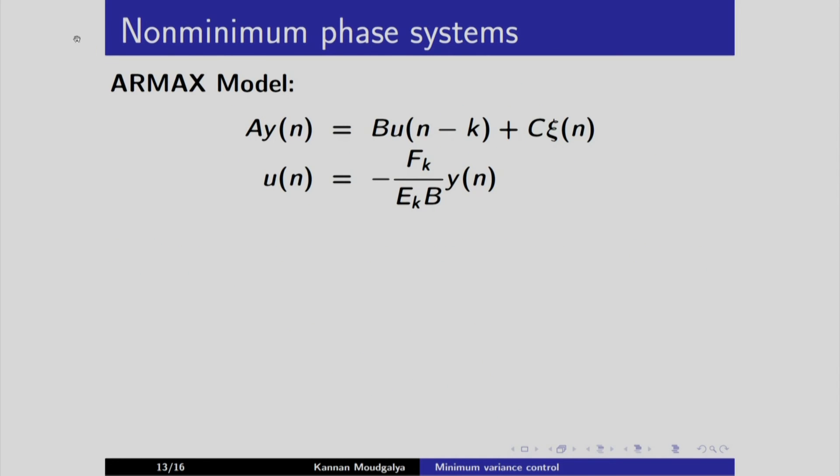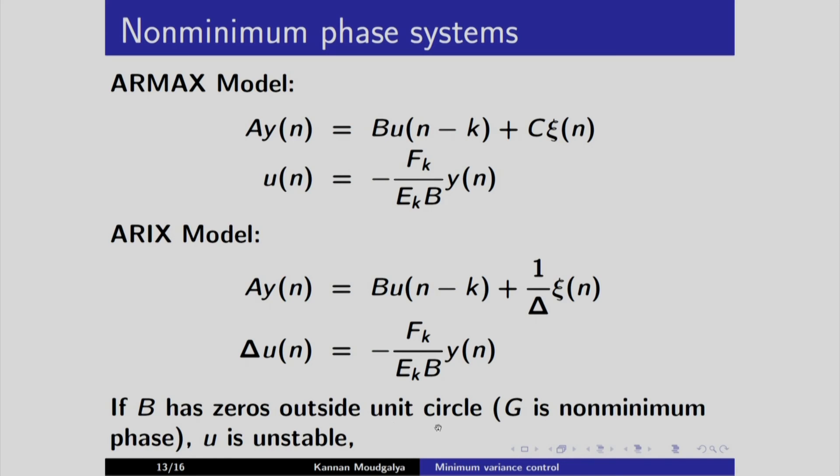We have to be careful when we have non-minimum phase systems. To explain that, we will take Ormax model and Riggs model. In all of them, we have this b coming in the denominator. If it is a non-minimum phase system, then what will happen is this b will have its 0s outside the unit circle. As a result, both controllers will be unstable. If b has 0s outside unit circle, that is g is non-minimum phase, u is unstable. The control law is unstable in both models and this method does not work. We no longer can use the approach that we have used until now.